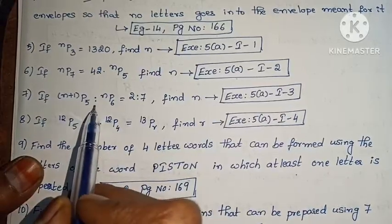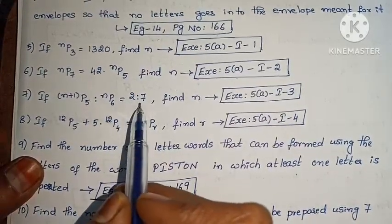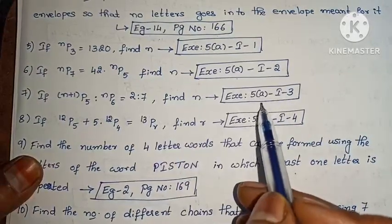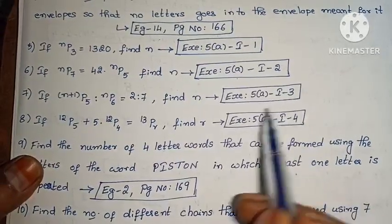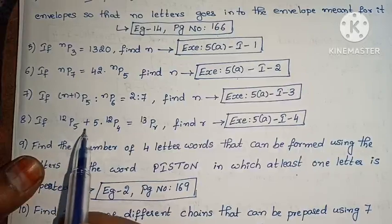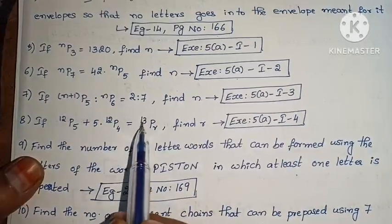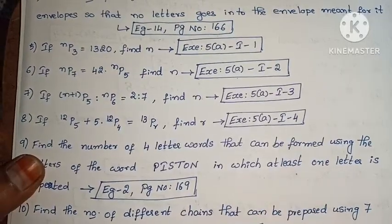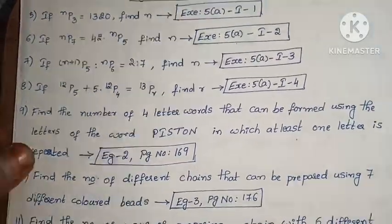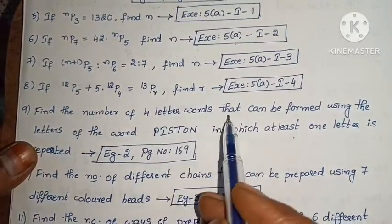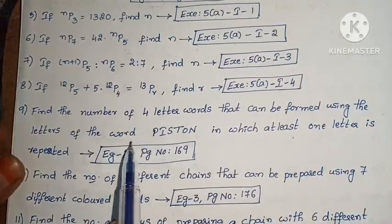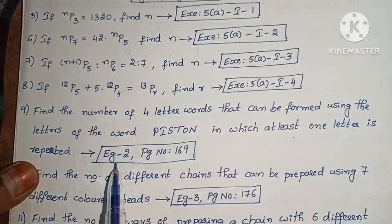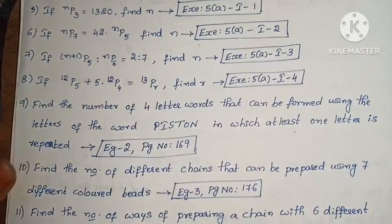Next: if (N+1)P5 to NP6 equals 2 to 7, find N (Exercise 5, Roman I, third one). Next: if 12P5 plus 5 into 12P4 equals 13PR, find R (Exercise 5, Roman I, fourth one). Next: find the number of 4-letter words that can be formed using the letters of the word PISTON in which at least one letter is repeated (Example 2, page 169).